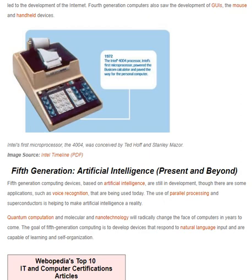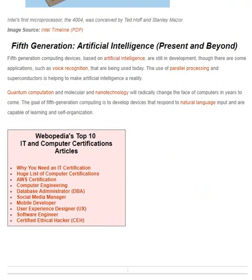Fifth generation — artificial intelligence, present and beyond. Fifth generation computing devices based on artificial intelligence are still in development, though some applications such as voice recognition are being used today. The use of parallel processing and superconductors is helping to make artificial intelligence a reality. Quantum computation and molecular nanotechnology will radically change the face of computers in years to come. The goal of fifth generation computing is to develop devices that respond to natural language inputs and are capable of learning and self-organization.